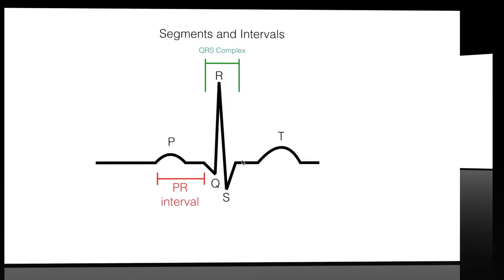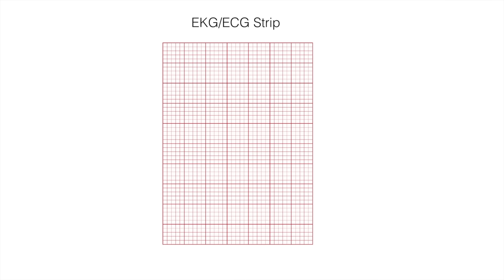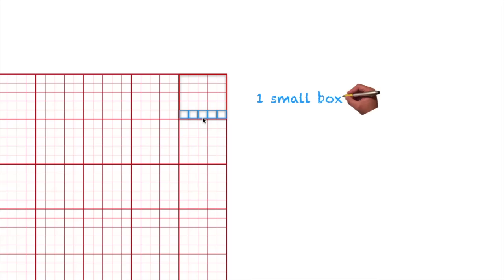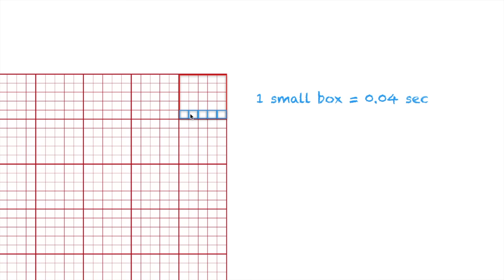This is your typical EKG strip. In an EKG strip, we have a big box, and inside a big box we have five small boxes. Each small box is equal to 0.04 seconds. So if a big box contains five small boxes, that means one big box equals 0.20 seconds. As long as you know that one small box is 0.04 seconds, we're good to go.